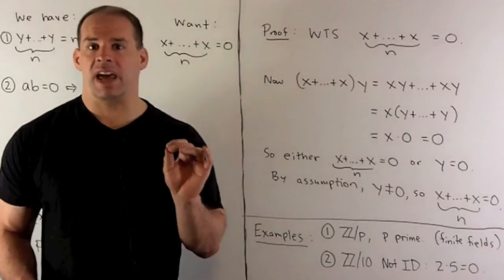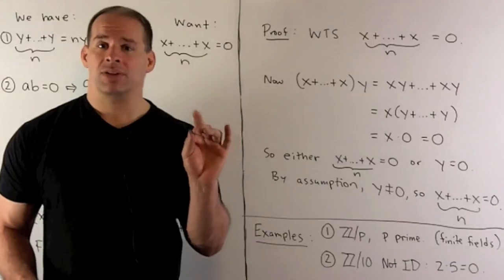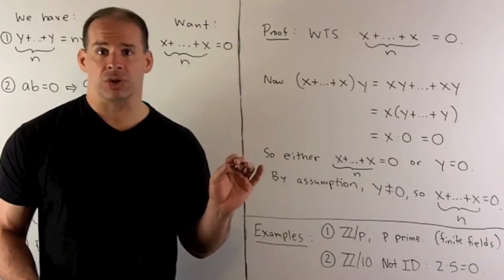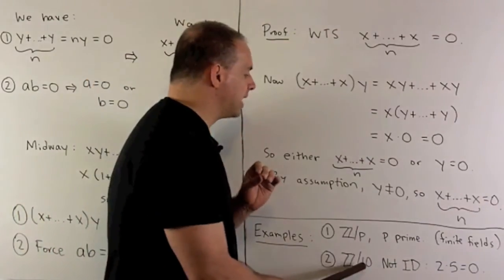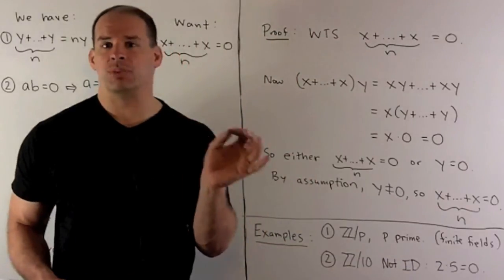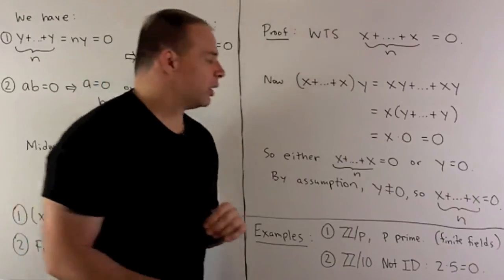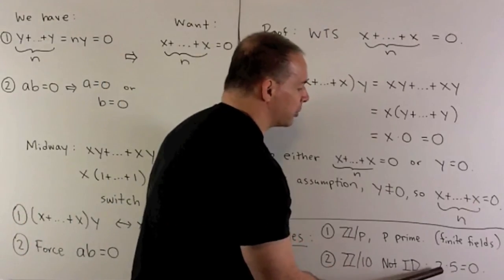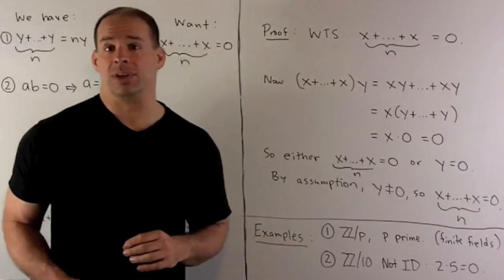Now, note something like Z mod 10, where we're not prime, it's going to be bad because you'll have zero divisors. For instance, in Z mod 10, if I was to take two times five, we get 10, I subtract 10 off, I get zero. So here, we're able to write zero as a product of two numbers that are not equal to zero.